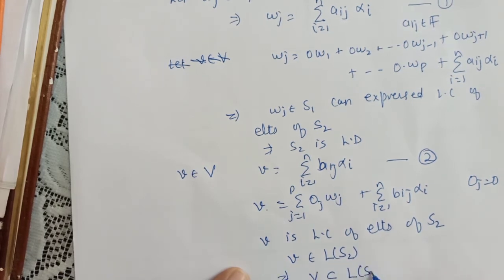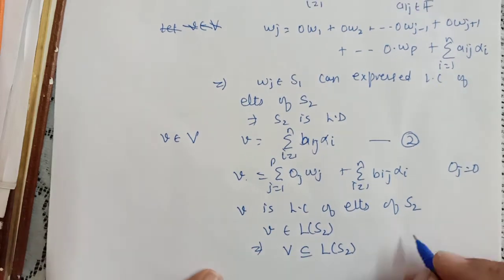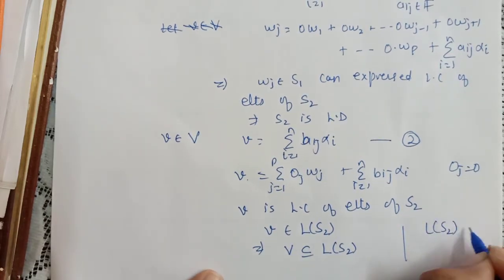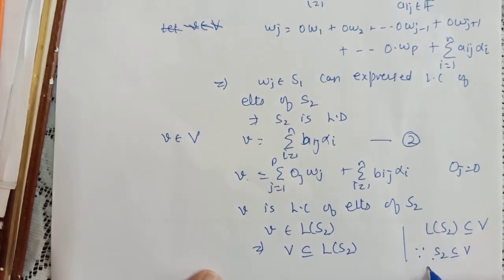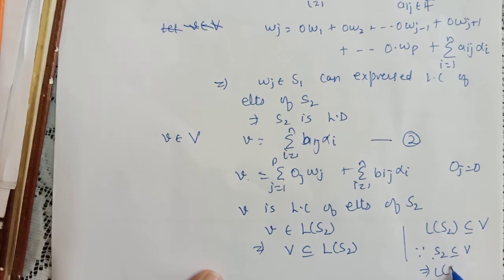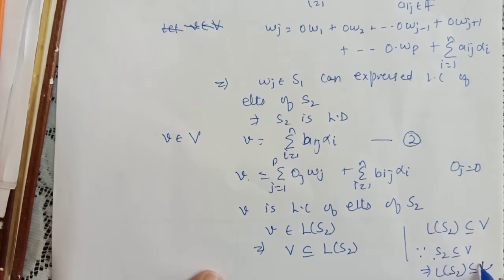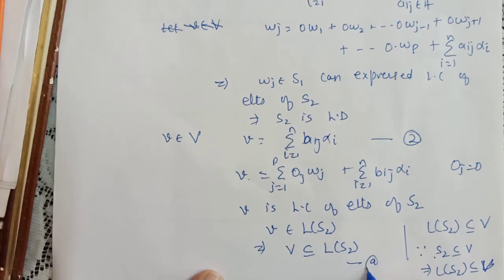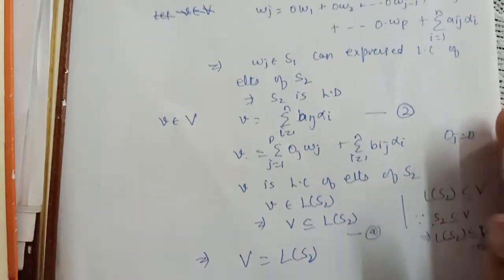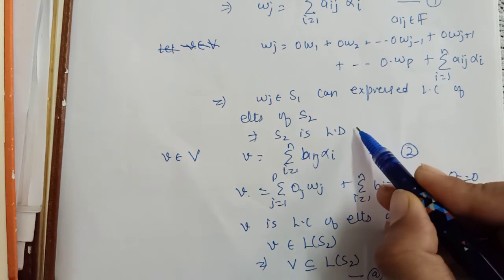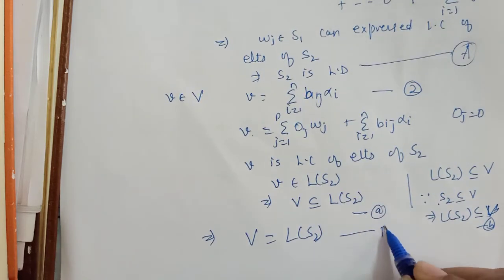So v belongs to the linear span of S₂, meaning V ⊆ span(S₂). Also, since S₂ is a subset of V and V is a vector space, closure under scalar multiplication holds, so span(S₂) ⊆ V. Combining these two results, we conclude V = span(S₂).